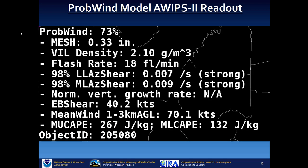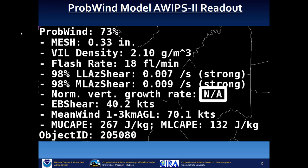The PROB WIND readout includes MESH, VIL density, Earth Network's flash rate, low-level and mid-level azimuthal shear, and the normalized vertical growth rate from satellite — though this may be unavailable when a cirrus shield gets in the way. It also includes bulk shear, mean wind, most unstable CAPE, and mixed layer CAPE.